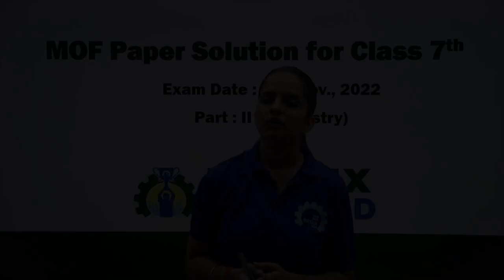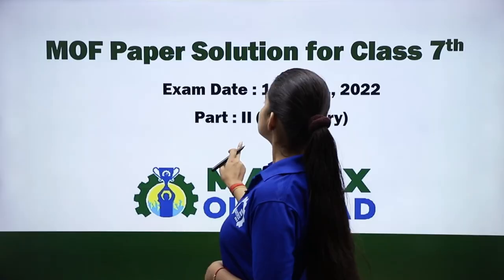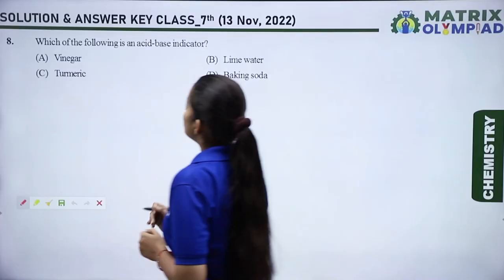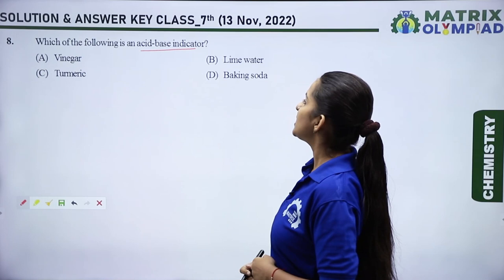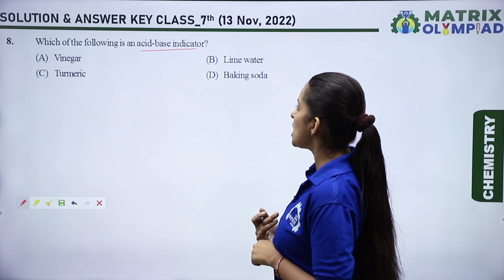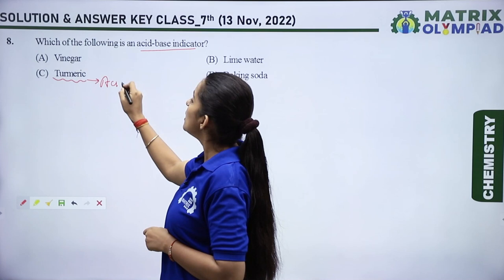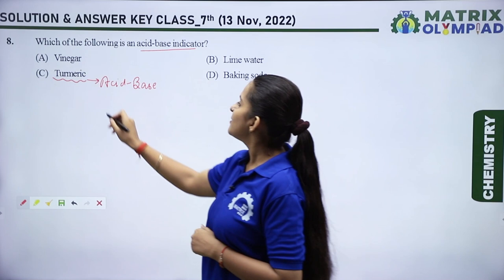Hello everyone, today we will discuss the MOF answer key for Class 7 Chemistry. Our first question is: which of the following is an acid-base indicator? Options are vinegar, lime water, turmeric, and baking soda. The correct answer is turmeric — it is an acid-base indicator. In acidic solution it remains yellow, and in a base it gives a red color. Option C is correct.